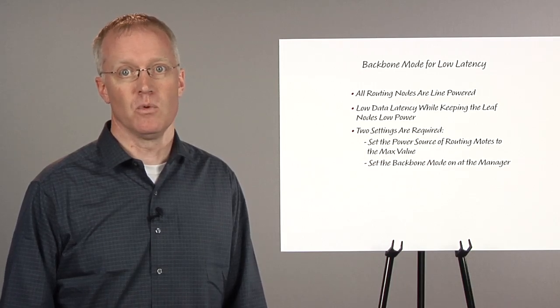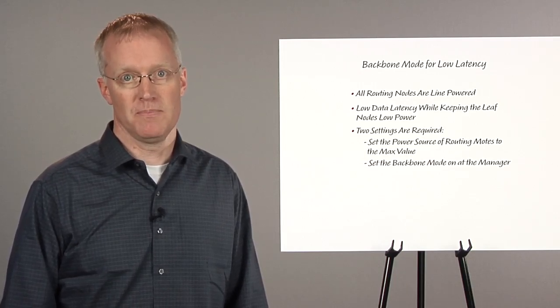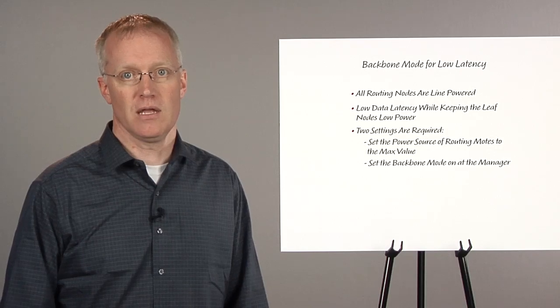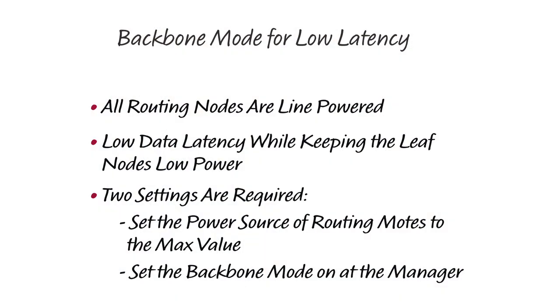The last configuration setting we'll discuss is backbone mode. This is the configuration setting you use if all the routing motes are line-powered, and if you want data latency to be fast, like for alarm messages. We need to make two changes. First, we need to set the routing motes to the max value power source. Second, we have to set up the backbone at the manager. This network mode tells the manager to lay in extra bandwidth that all motes will share and allows data to be sent at lower network latency.